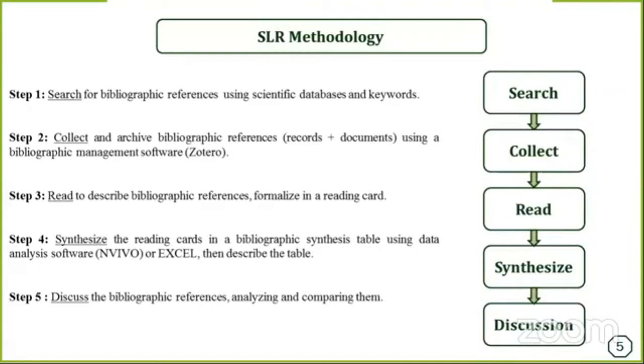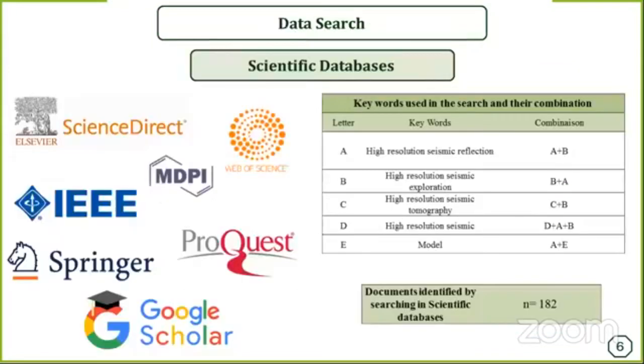Now we will go through every step in more detail. The first step is identification. We have to identify keywords and their combinations. We need to identify which databases we're going to search in, depending on the field and research topic. We also need to identify how many documents are extracted. In this case, we have 182 documents identified by searching in different scientific databases.